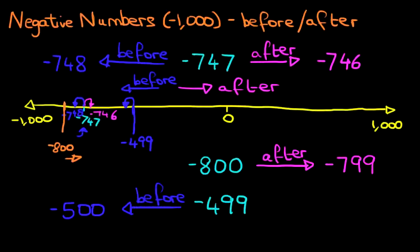And that is how we calculate numbers before and after with numbers up to minus 1,000. Be very, very careful if you're dealing with negative numbers so you can work out which number is before and after. See you next time.